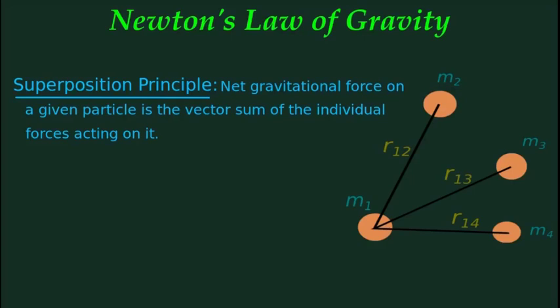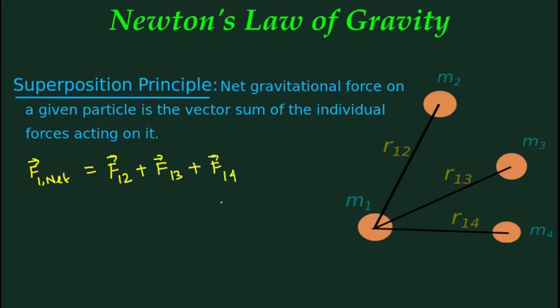In this video we will discuss the superposition principle for gravitational force. The superposition principle says that the net gravitational force on a given particle is the vector sum of the individual forces acting on it. For example, with four particles m1, m2, m3, and m4, the total force on m1 equals f12 plus f13 plus f14.